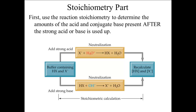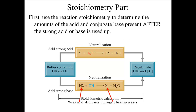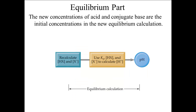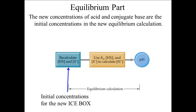In the stoichiometry part, the acid or base reacts completely with the conjugate base or conjugate acid, converting the base into the acid or the acid into the base. If we add a strong acid, say X moles, then the amount of the conjugate base will decrease by X moles, and the amount of the acid will increase by X moles. Once we know the new amounts of the acid and conjugate base, we can calculate the new concentrations, which become the initial concentrations for the new equilibrium calculation.